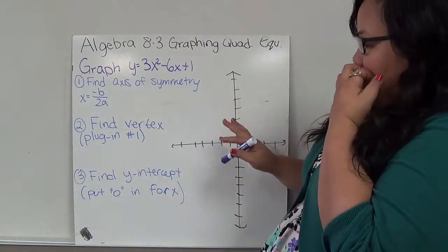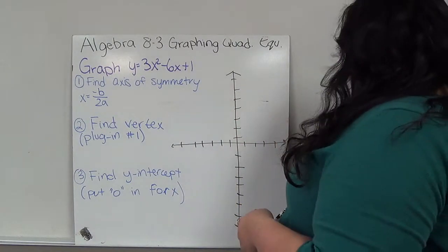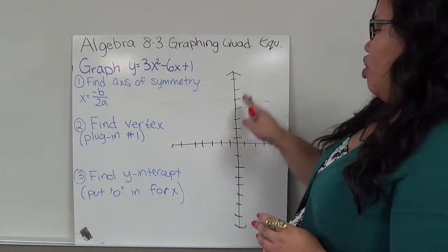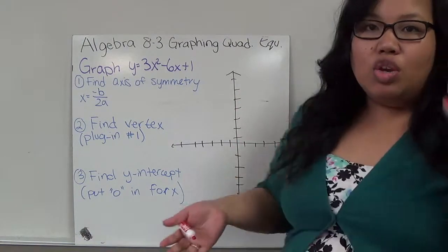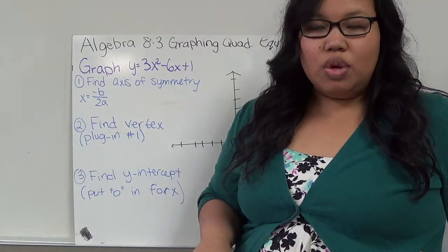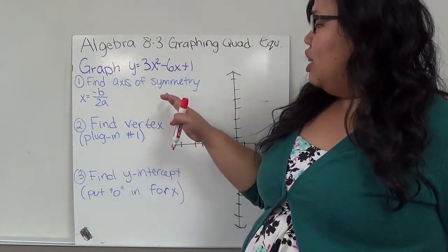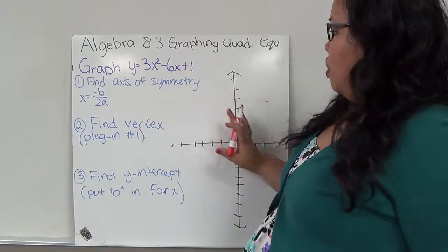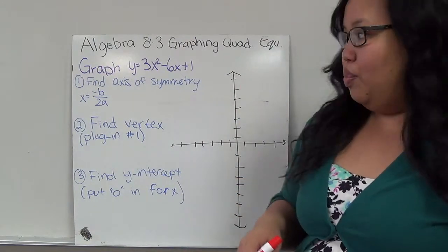The first step into graphing them, you could do a table, but the table might take a while because sometimes you only get part of the graph according to which numbers you choose. Like, you know how we usually graph lines and we do negative 2, negative 1, 0, 1, and 2. But these steps will allow you to find how to do it without doing unnecessary work.